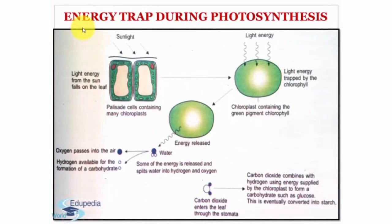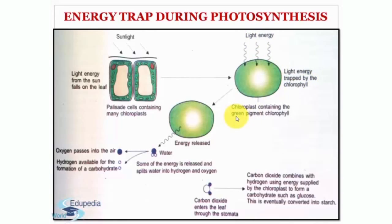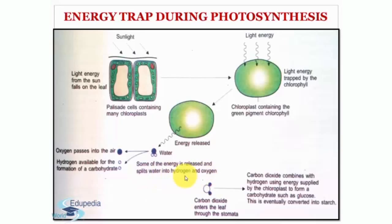Here you can see an image that shows how energy is trapped during photosynthesis. Sunlight falls on the leaves, and palisade cells contain many chloroplasts. Light energy is trapped by chlorophyll, which is the green pigment present in chloroplasts — its structure has been discussed in the previous video lecture. Some of the energy splits water into hydrogen and oxygen, and oxygen passes into the air while hydrogen is made available for the formation of carbohydrates.